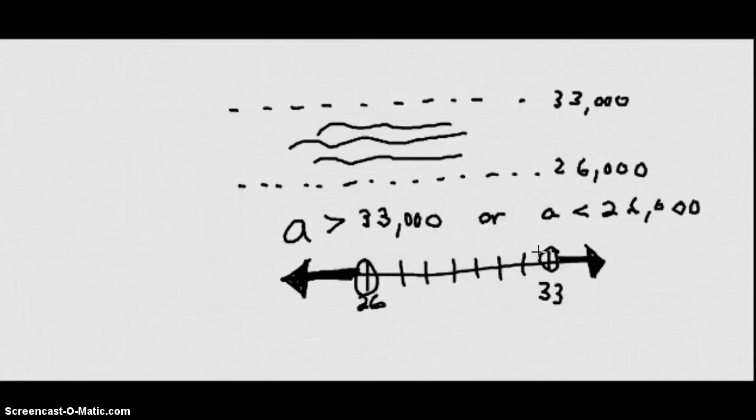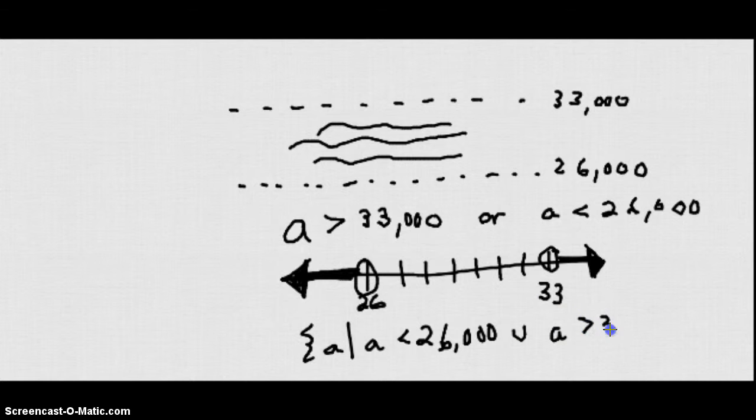So we could write that something like A such that A is less than 26,000, united or in union with the graph of A is greater than 33,000. When we're connecting two graphs that aren't connected, we use this little U symbol to represent union.